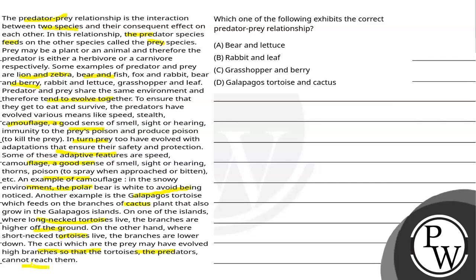So in the light of the given paragraph, we have to solve this question. We have to answer: which of the following exhibits the correct predator-prey relationship? The options are: A) bear and lettuce, B) rabbit and leaf, C) grasshopper and berry, D) Galapagos tortoise and cactus.